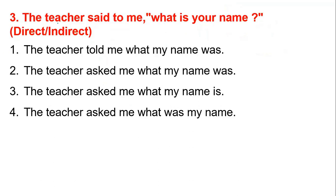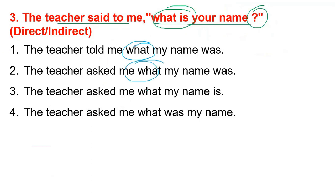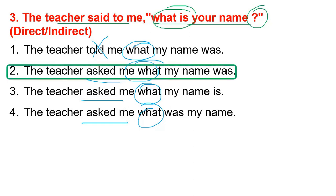The teacher said to me: 'What is your name?' — this is an interrogative sentence. The correct answer is: The teacher asked me what my name was. Option two is the correct answer.